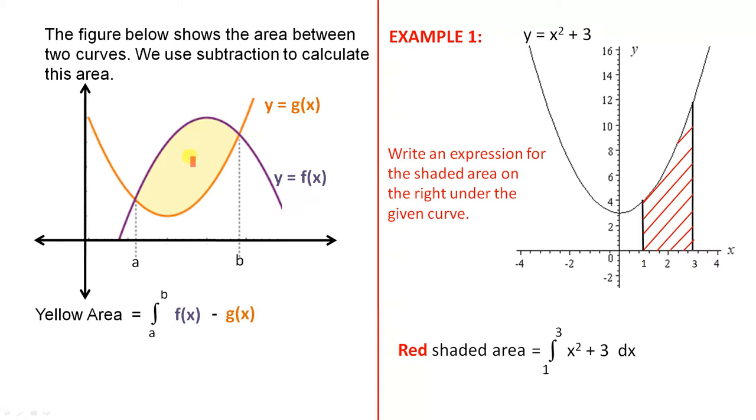The yellow area is the integral from a to b of f(x) minus g(x) dx, where a and b are where the two curves intersect. This means we find the whole area under y equals f(x), including the white part, then subtract the white area under g(x). After we find the area under the purple curve, we subtract the white area.